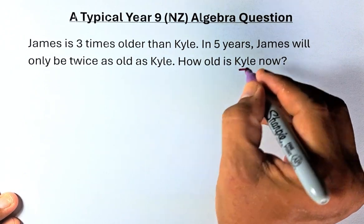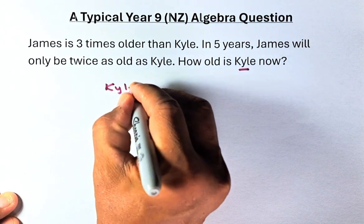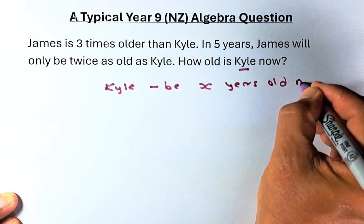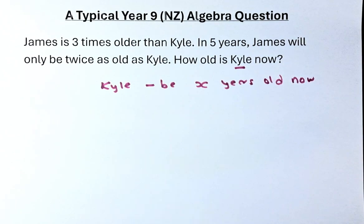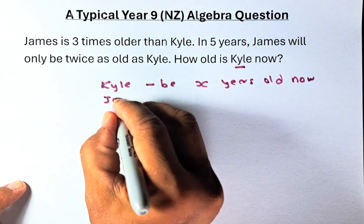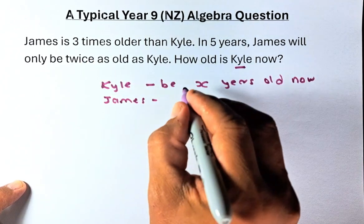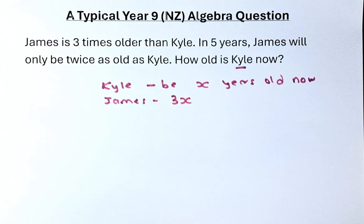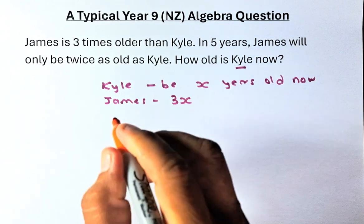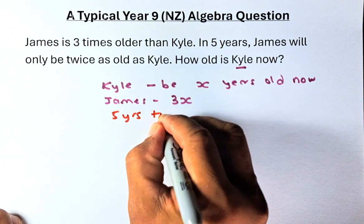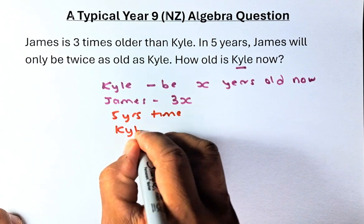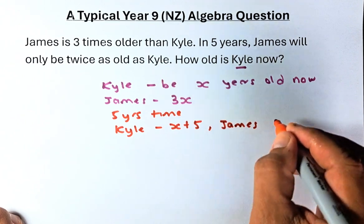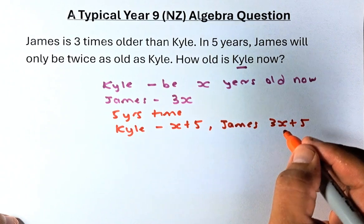The question is: how old is Carl? So we need to let Carl be X years old now. If Carl is X years old, James is now going to be 3 times older, so James must be 3X. In 5 years time, Carl will be X plus 5, while James will be 3X plus 5, because they each add 5 to their age.